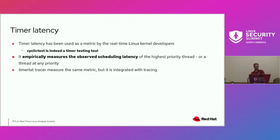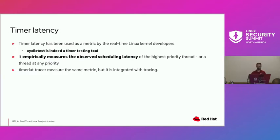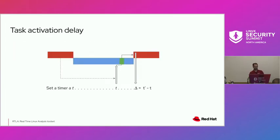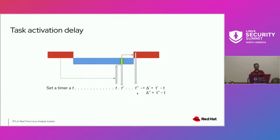The next tracer is the timer lat tracer. Timer latency has been used as the metric for preemptability. At the end of the day, cyclic test is a timer testing tool — it empirically measures the observed scheduling latency of the highest-priority thread. The timer lat tracer measures the same metric and tries to mimic that behavior, but it's integrated with tracing and provides more data. Cyclic test works by: setting a timer in the future, going to sleep, waiting to be activated by an external timer IRQ that wakes the task, which then reads the time and computes the delta.